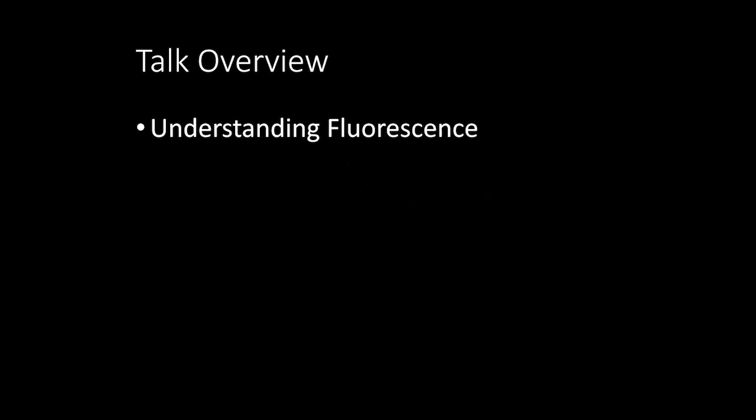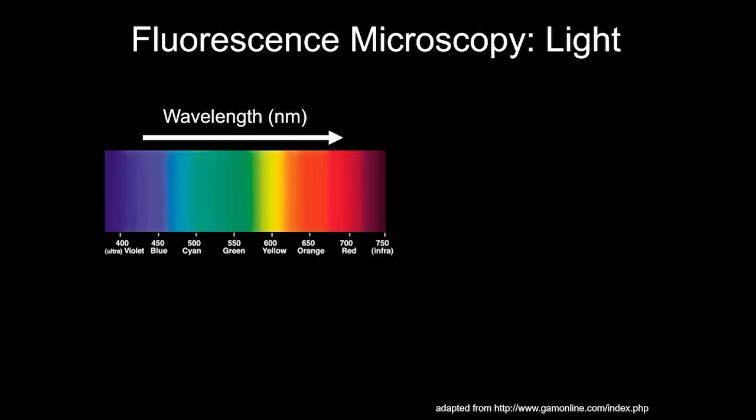Let's start with the basics of fluorescent microscopy. Up here you can see the visible spectrum of light, starting at around 350–400 nanometers and going all the way up into the infrared.